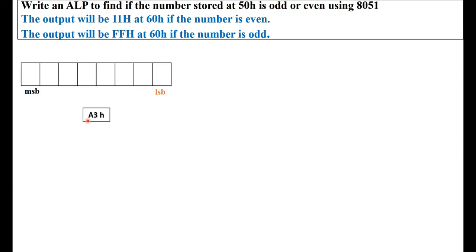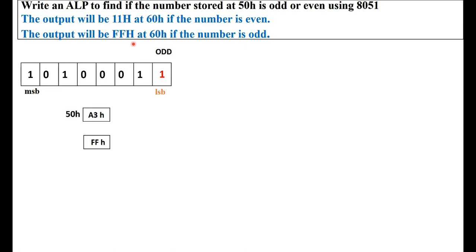Let us consider an 8-bit number A3H stored at memory location 50H. Expanding A3: A is 1010 and 3 is 0011. Our interest is the least significant bit. When we check the least significant bit, we find that it is 1. A 1 in the least significant bit position indicates the given number is an odd number. Once we determine it is odd, we need to store FFH at memory location 60H. So we just need to check the LSB bit position and determine if the given number is even or odd.